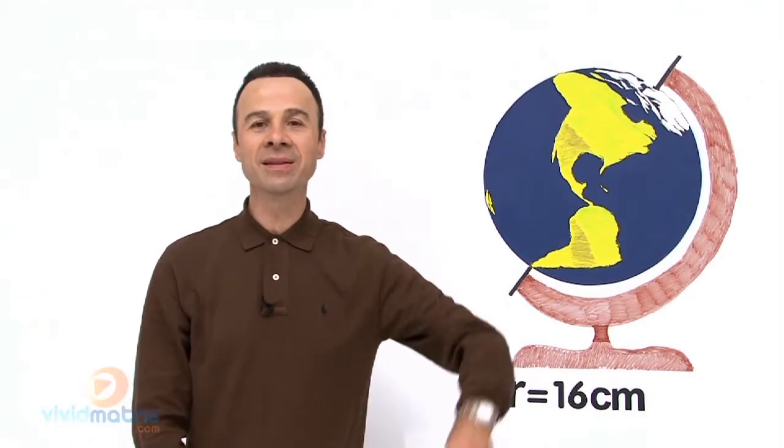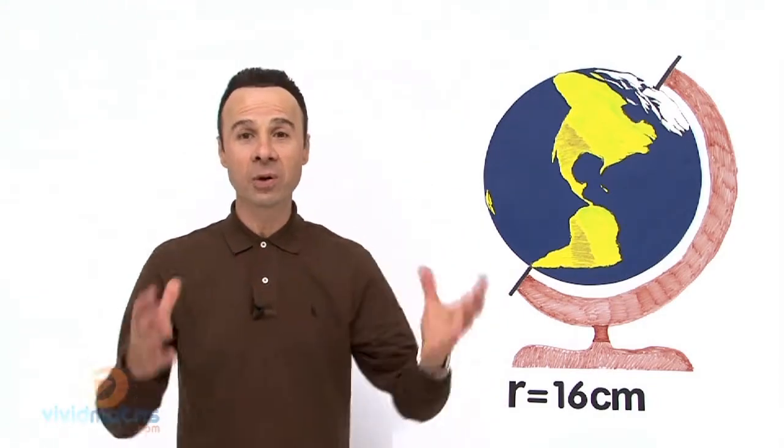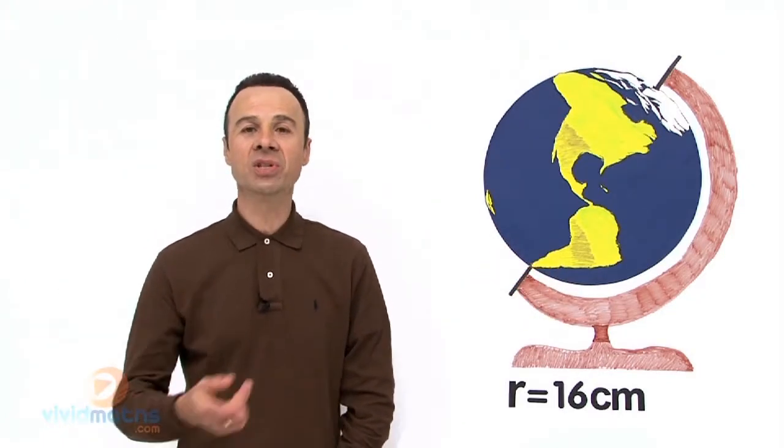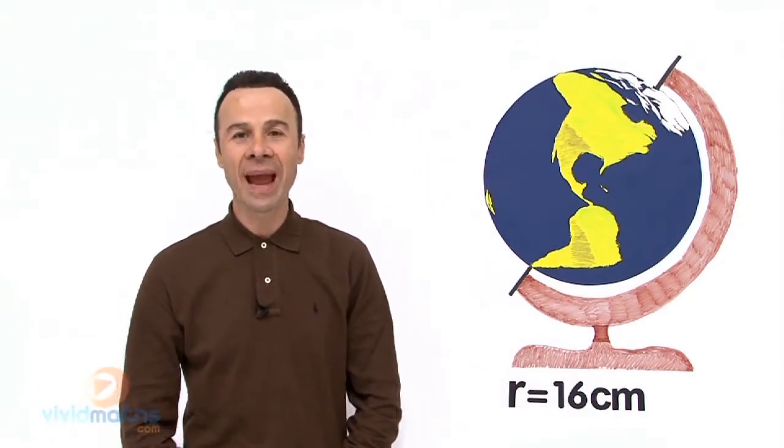We're going to work this out in two steps. Number one, write out the formula for volume of a sphere—because it is a sphere, even though it's a planet or a globe. Then we substitute the value of radius into that and come up with the answer.